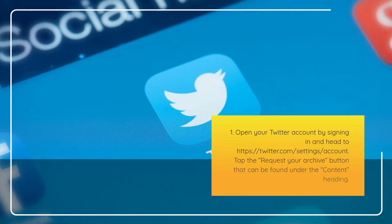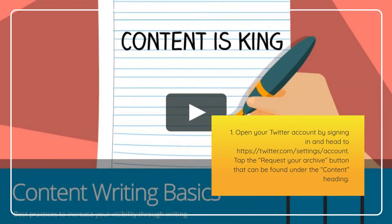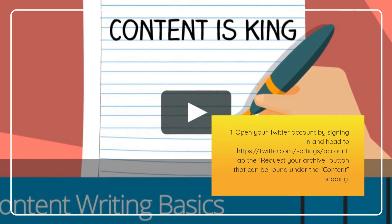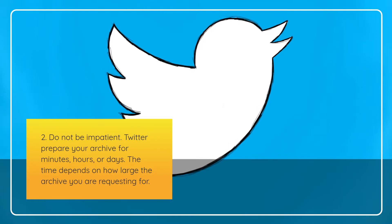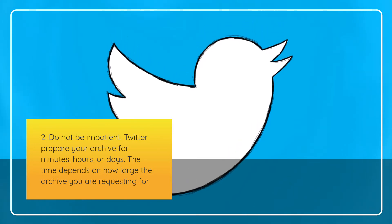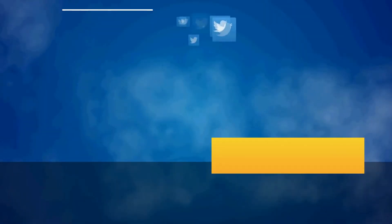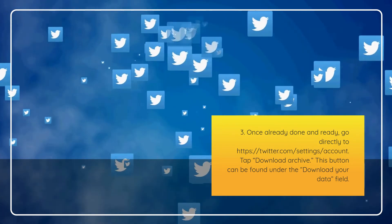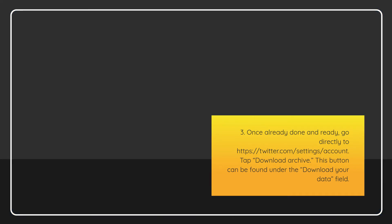To request your archive: Open your Twitter account and go to https://twitter.com/settings/account. Tap the 'Request your archive' button found under the content heading. Be patient — Twitter will prepare your archive in minutes, hours, or days depending on the size. Once ready, go back to https://twitter.com/settings/account and tap 'Download Archive,' found under the 'Download your data' field.